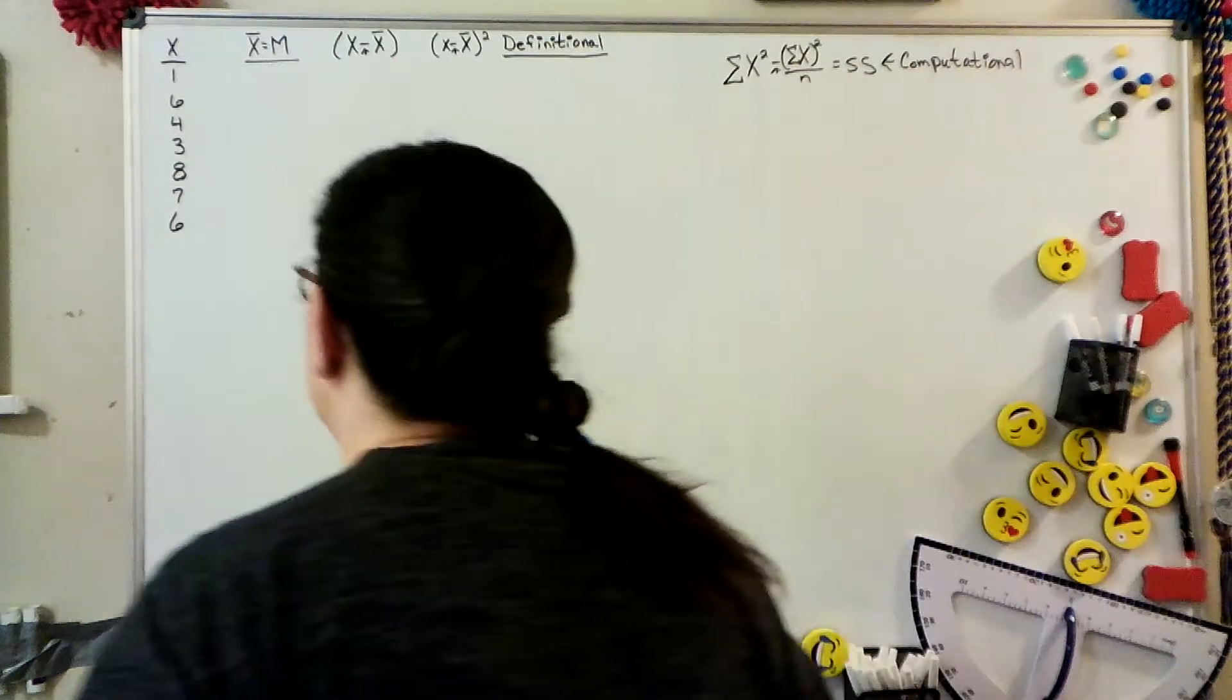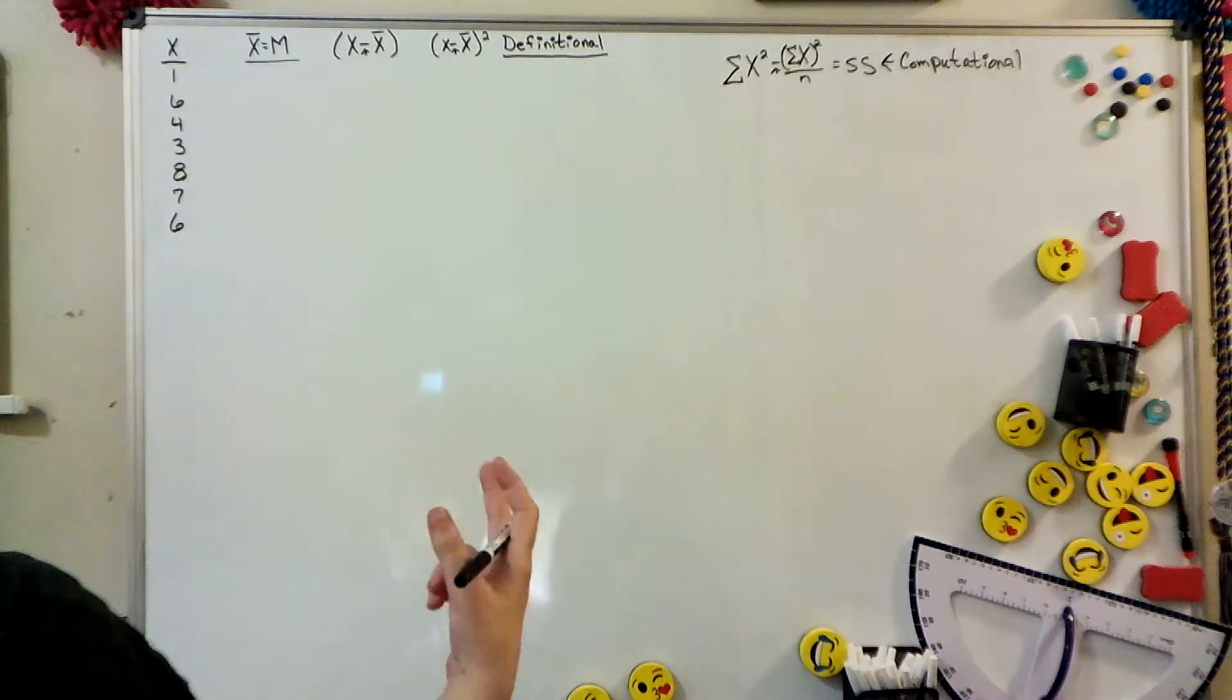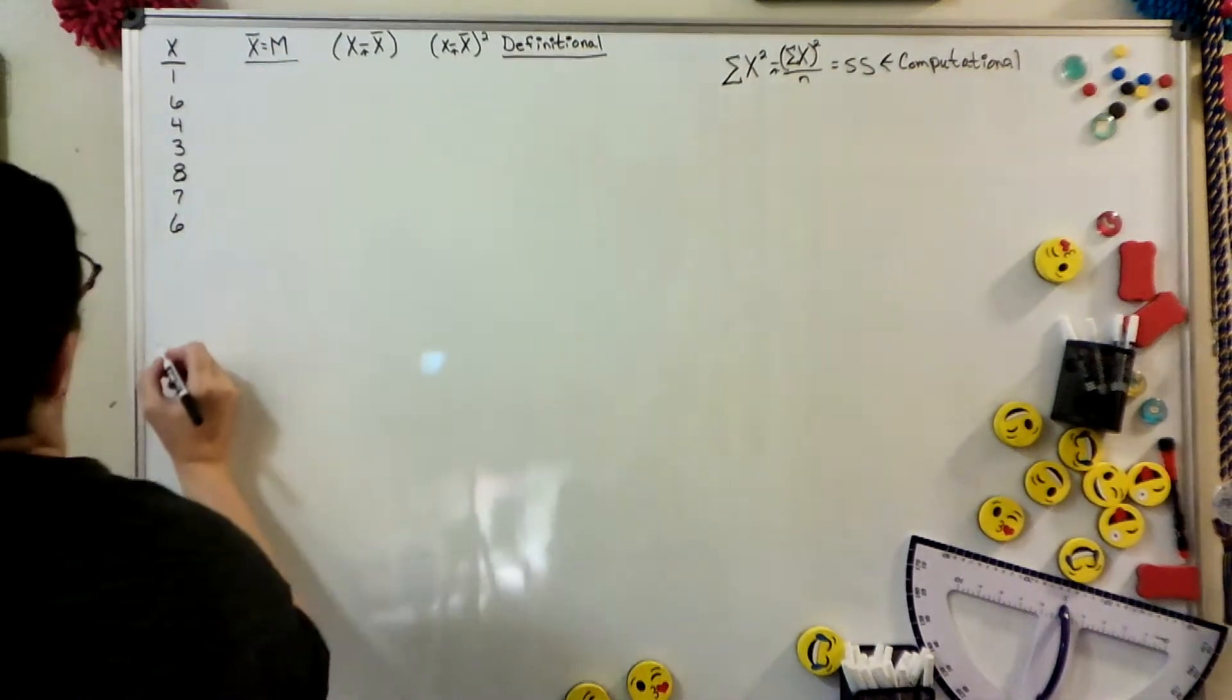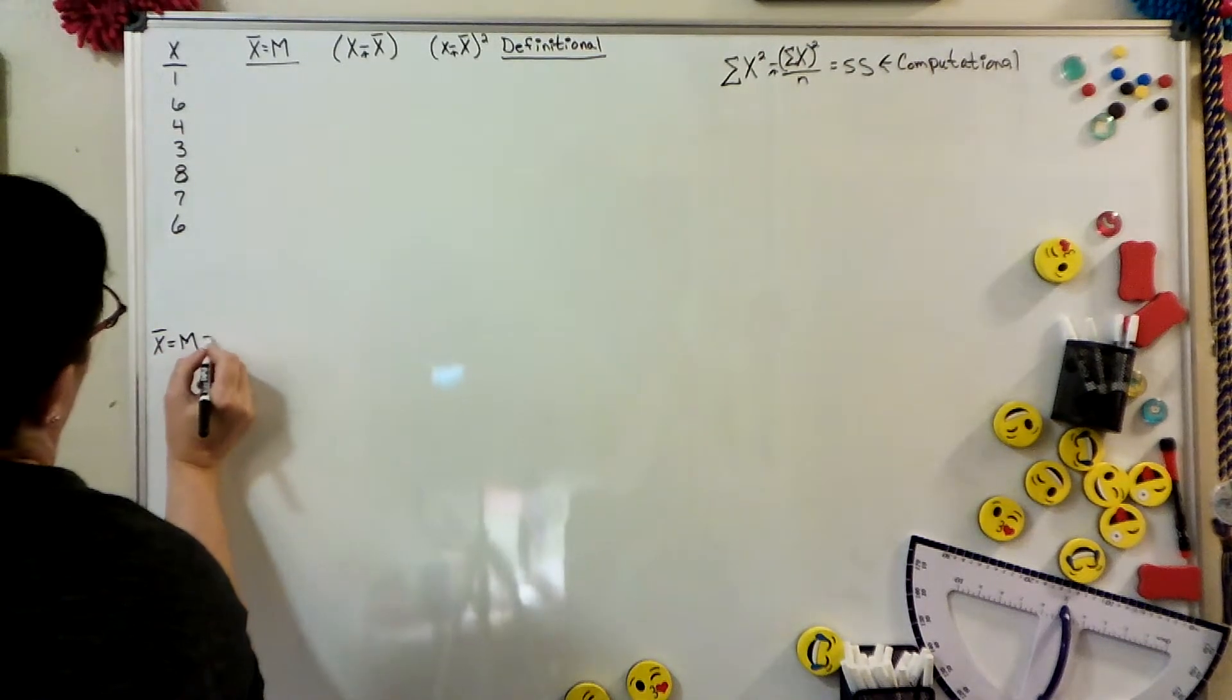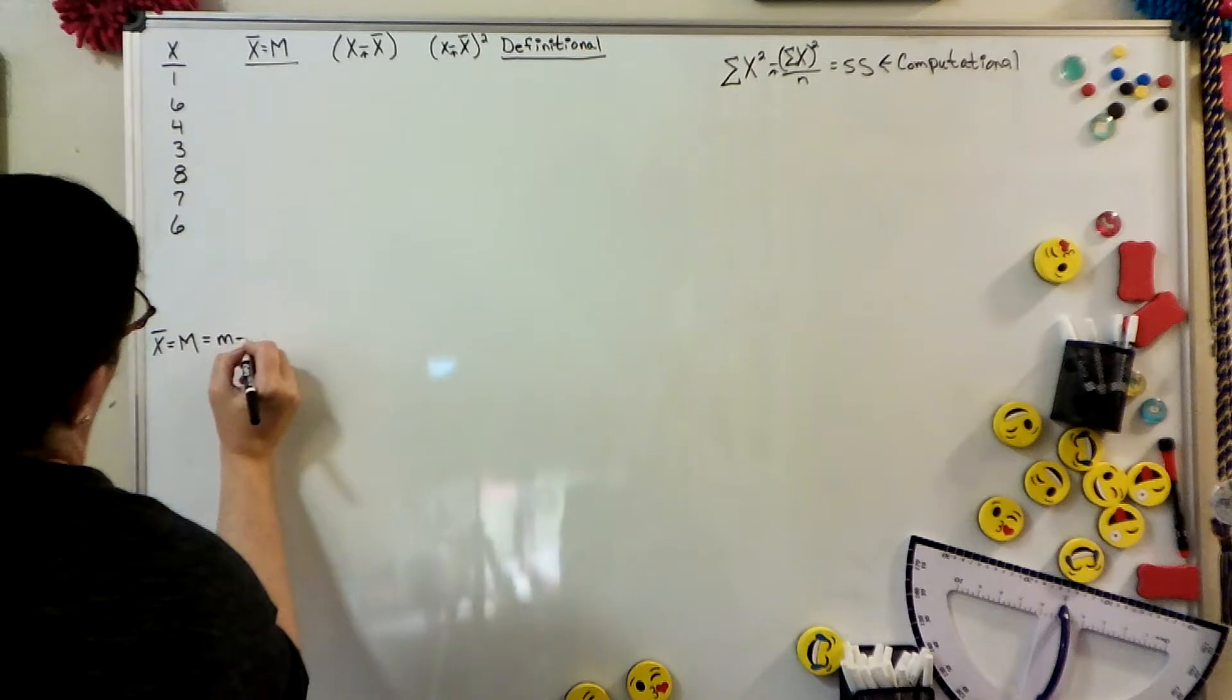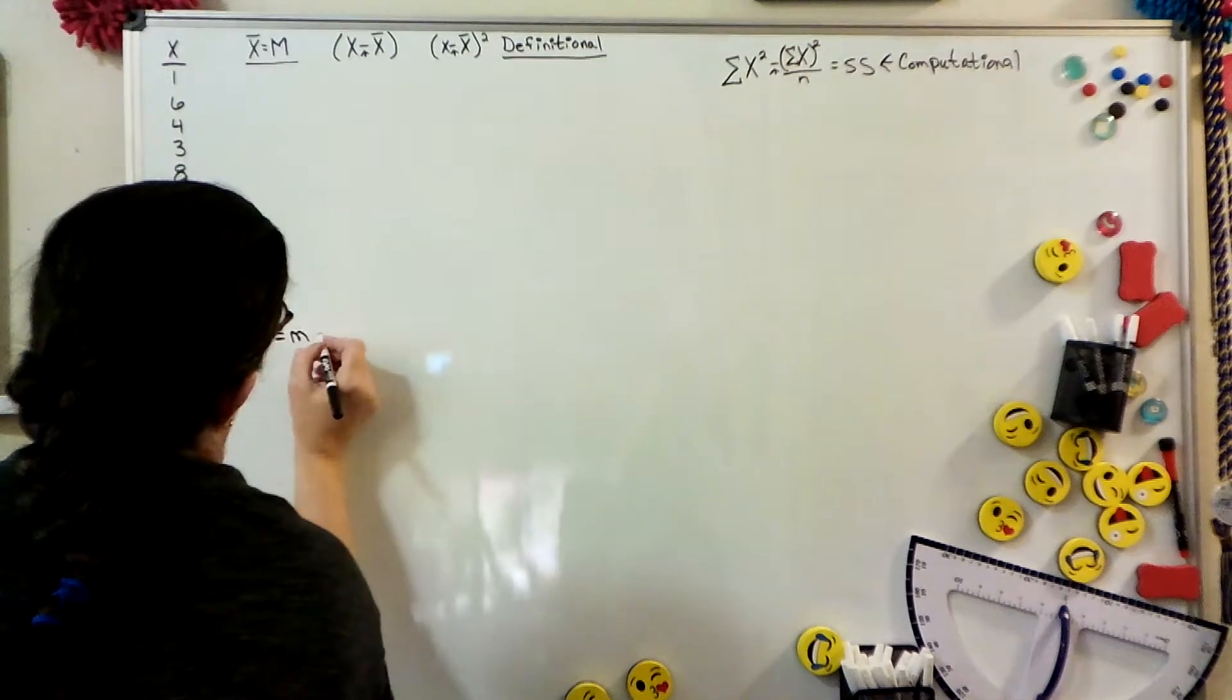With a definitional formula, the first thing you have to do is find the mean. X bar and M are the same thing. They're both the mean, for example, and they're your measure of central tendency.